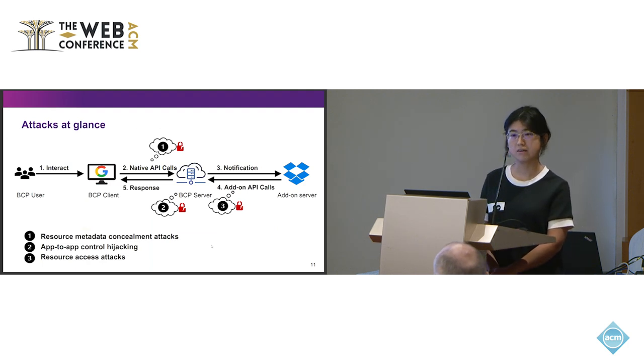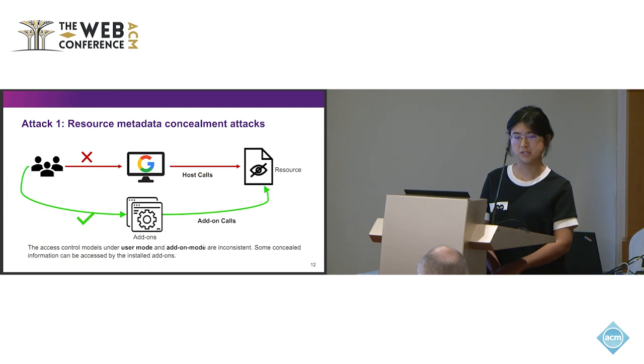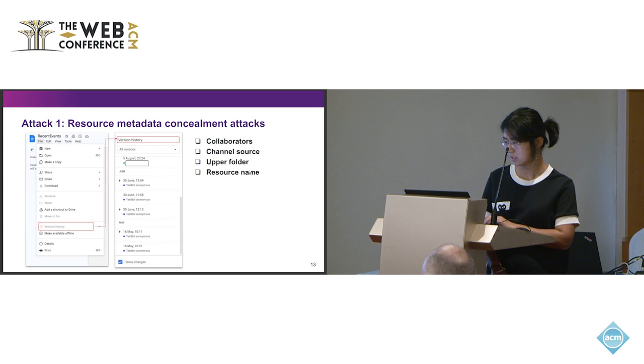We have identified three vulnerabilities in the current access control of the BCP, and we will talk in detail later. So the first one is Access Metadata Concealment Attack. We know that in the general mode, when user want to access the resource here, the resource may contain some hidden information that this user cannot see. Like if the user is not the owner, and only the viewer or editor, he cannot see some hidden data of the resource through the mobile browser and the host call. By utilizing the IDAM, actually this hidden data are fetched by the user. And which means that the current Access Control under the user mode and the IDAM mode are in consistency, and the user can utilize this vulnerability to access some hidden data. We have revealed three or four types of hidden data, like your collaborator information, your Google Chat or channel source, your upper folder structure, and even your resource name by utilizing this vulnerability.